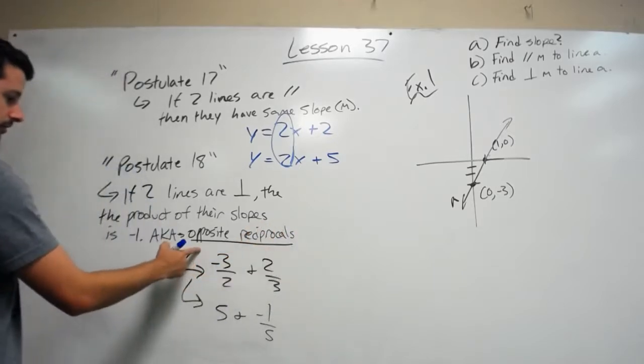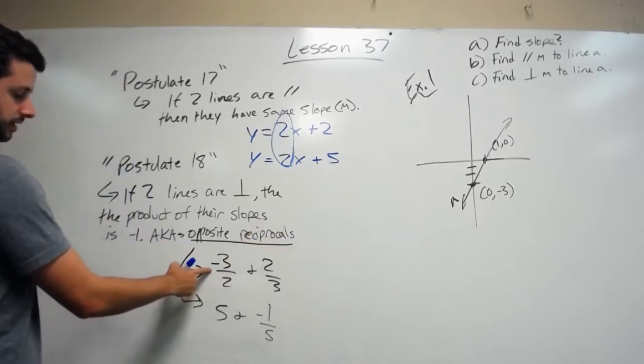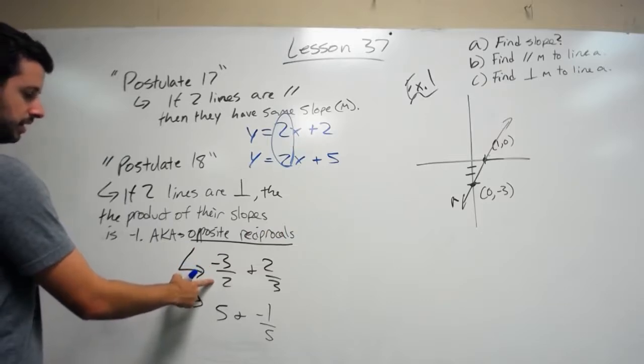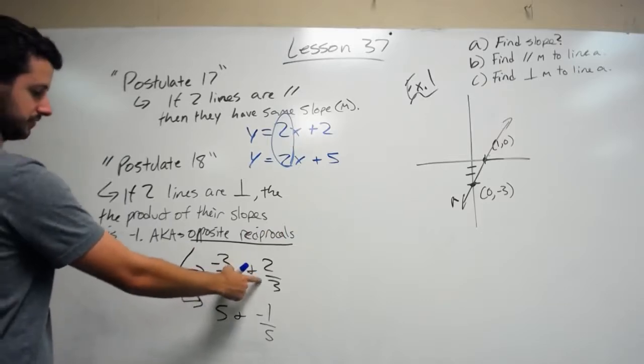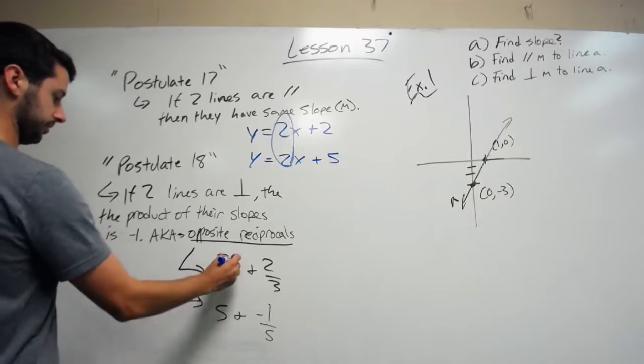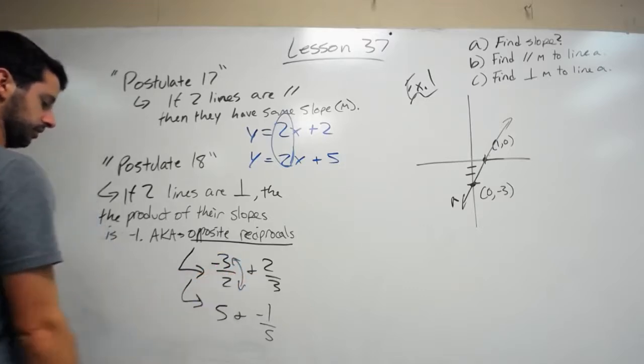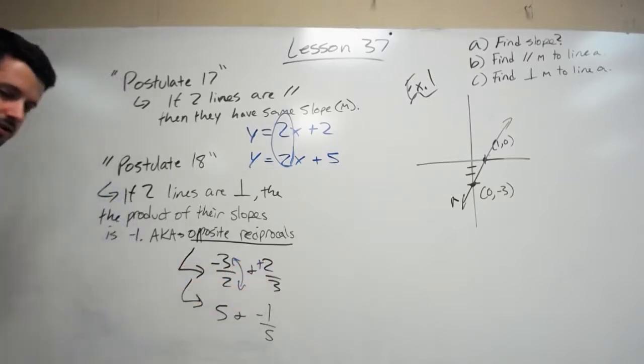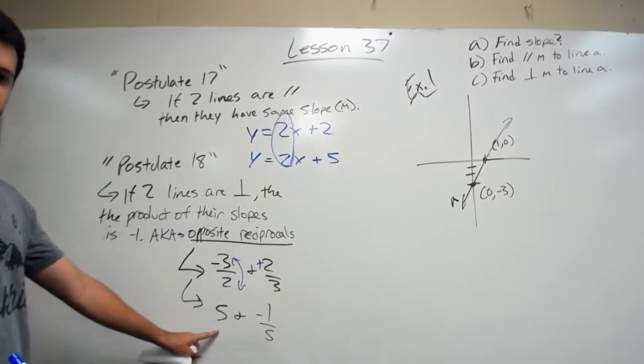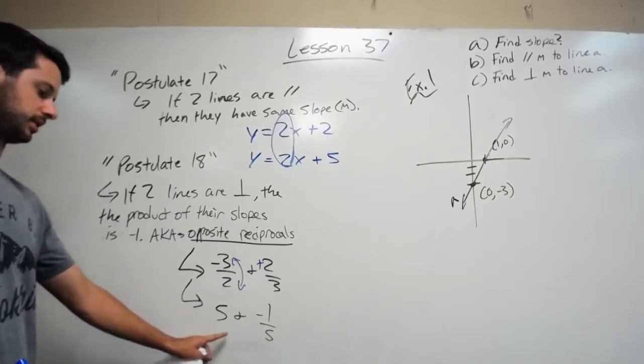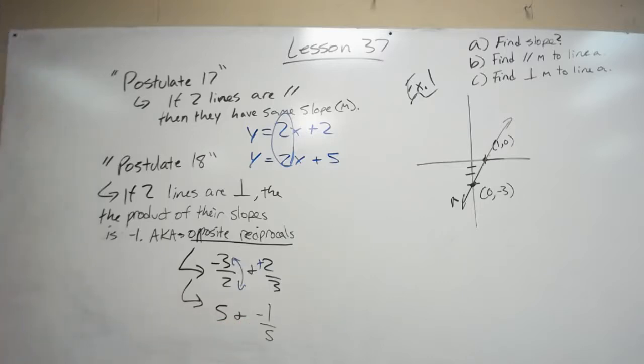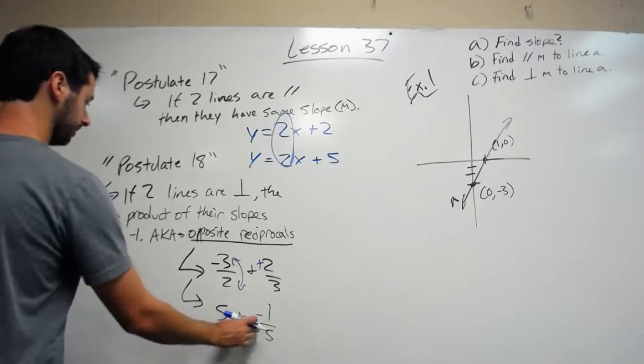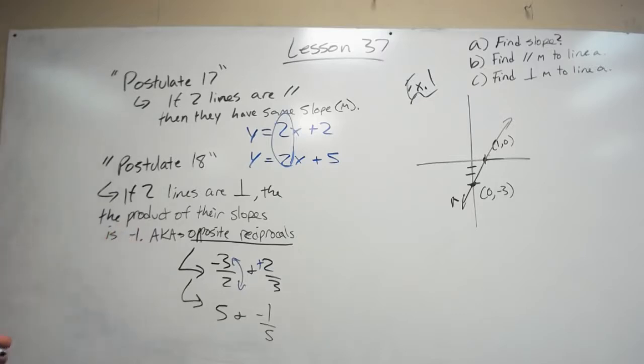Take a fraction like negative 3 over 2. Its opposite reciprocal would be positive 2 over 3. You simply flip the numerator and denominator, and the negative becomes positive or vice versa. If you have the number 5, its negative reciprocal would be negative 1 over 5. If you multiply them, they have a product of negative 1, but I think of it as opposite reciprocals.